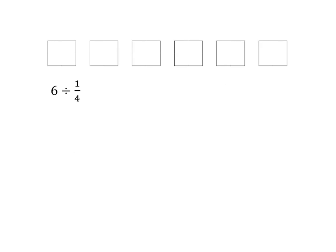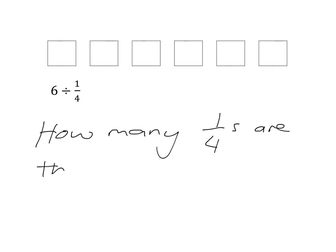If we look at 6 divided by a quarter, we can understand this in the same way as 10 divided by 2 is asking us how many 2s are there in 10. So again, we can see 6 divided by a quarter is asking us how many quarters are there in 6. So we're asking ourselves how many quarters can we find in 6 wholes: 1, 2, 3, 4, 5, 6.